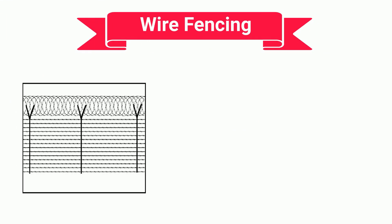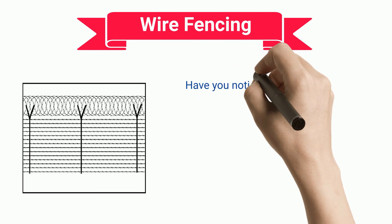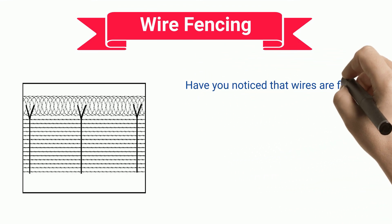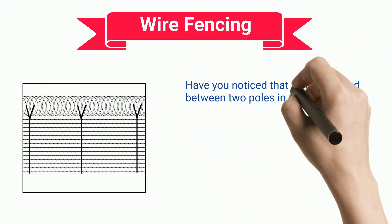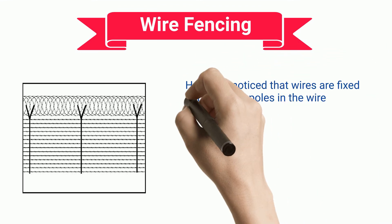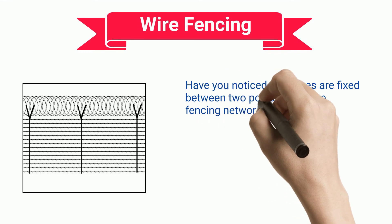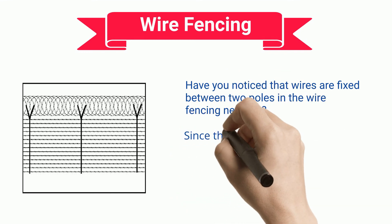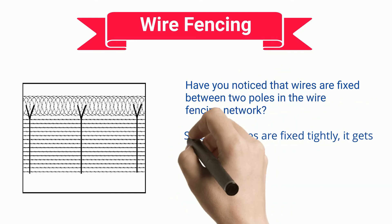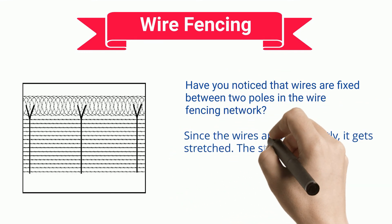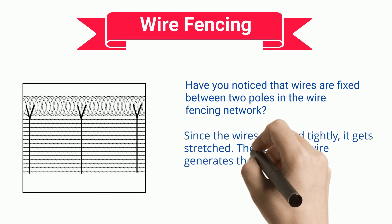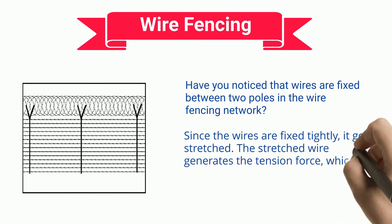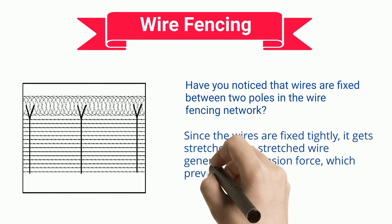Wire Fencing. Have you noticed that wires are fixed between two poles in a wire fencing network? Since the wires are fixed tightly, they get stretched. The stretched wire generates tension force, which prevents them from breaking.